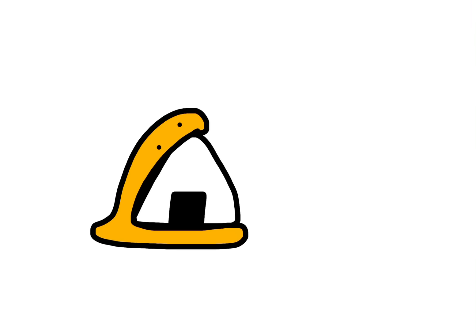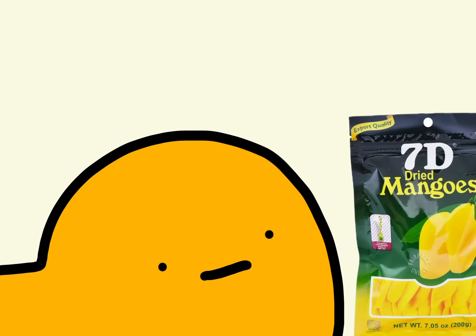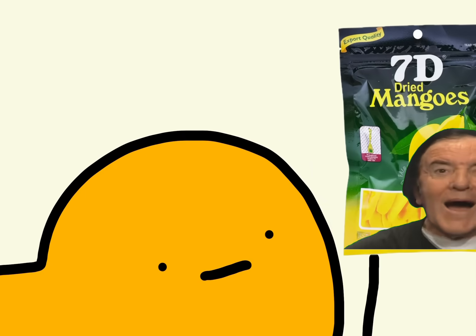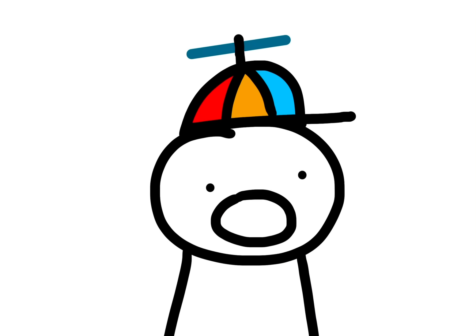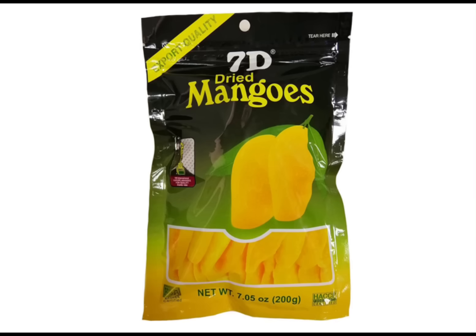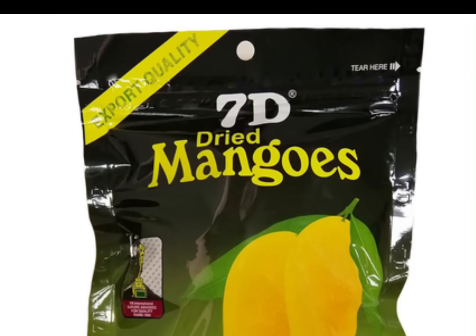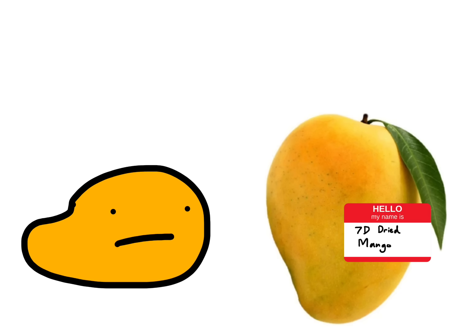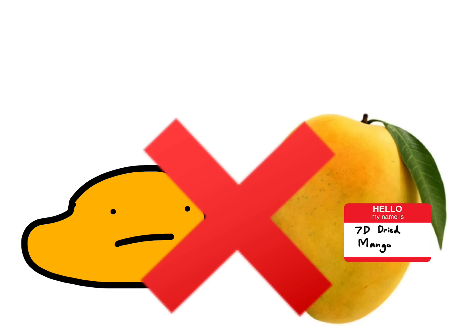So recently, I was going shopping for some food when I found a specific packet of dried mangoes. That's great, you may say. Why are you making an entire YouTube video about it? Well, that's because this packet in particular said that there were seven-dimensional dried mangoes inside, which is quite intriguing because I've never seen a seven-dimensional dried mango before.